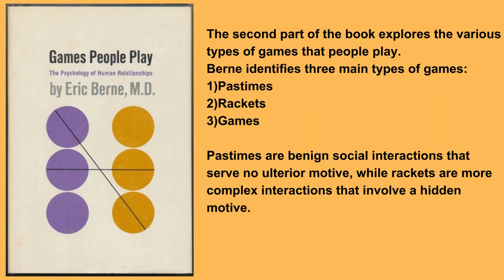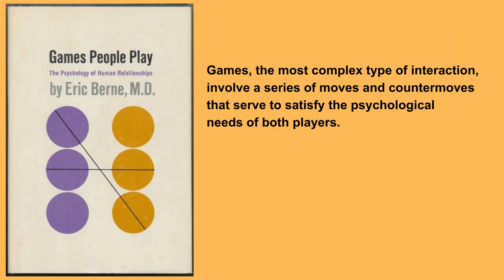The second part of the book explores the various types of games that people play. Berne identifies three main types: pastimes, rackets, and games. Pastimes are benign social interactions that serve no ulterior motive, while rackets are more complex interactions that involve a hidden motive. Games, the most complex type, involve a series of moves and countermoves that serve to satisfy the psychological needs of both players.